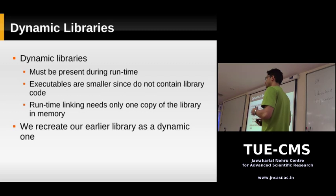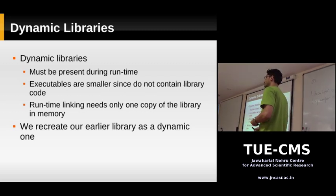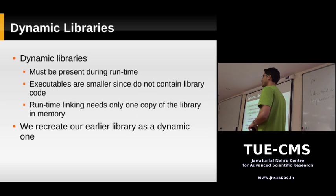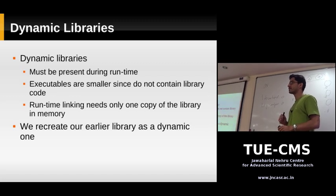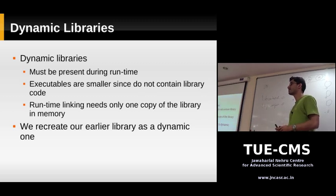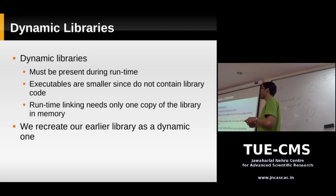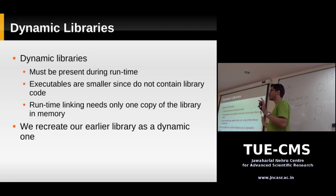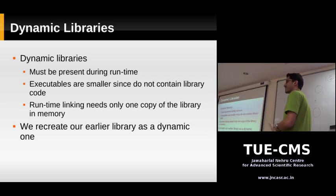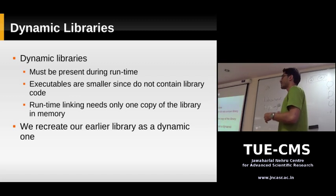Regarding the error we saw earlier when compiling without a library — that was a compile time error during static linking. For dynamic linking, we'll use some special options in gcc so it doesn't complain about undefined symbols, and it will just produce an executable. Then when you run it, the dynamic linker of the operating system will take care of hooking up the library. The advantage is that your executables will be smaller because they don't have the actual library code in them. The operating system keeps only one copy of the library in memory — whenever you run a program using this library, it loads the program and links it to this single copy in memory.